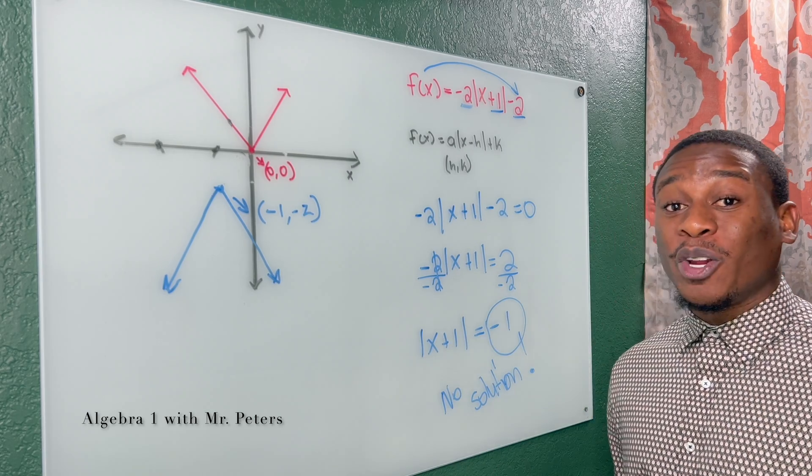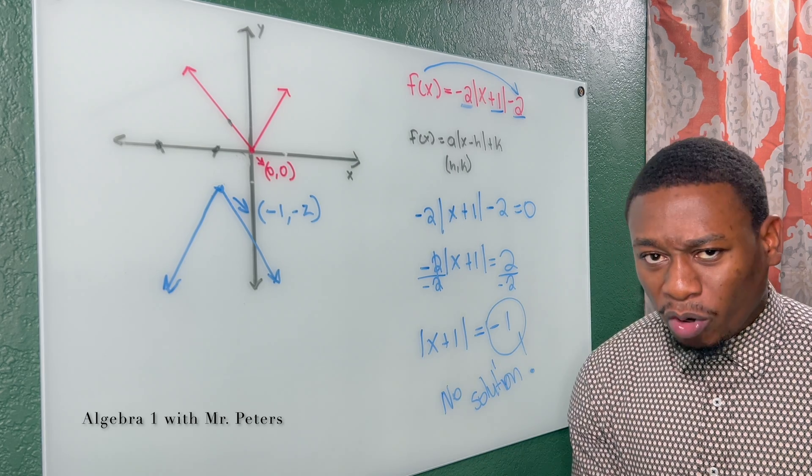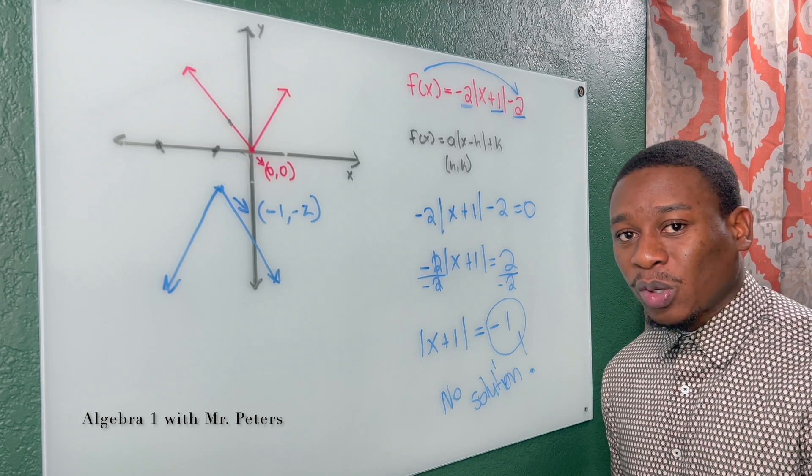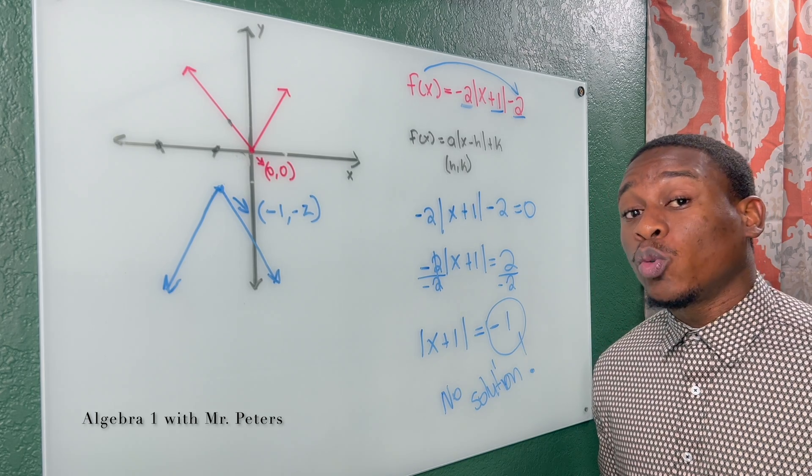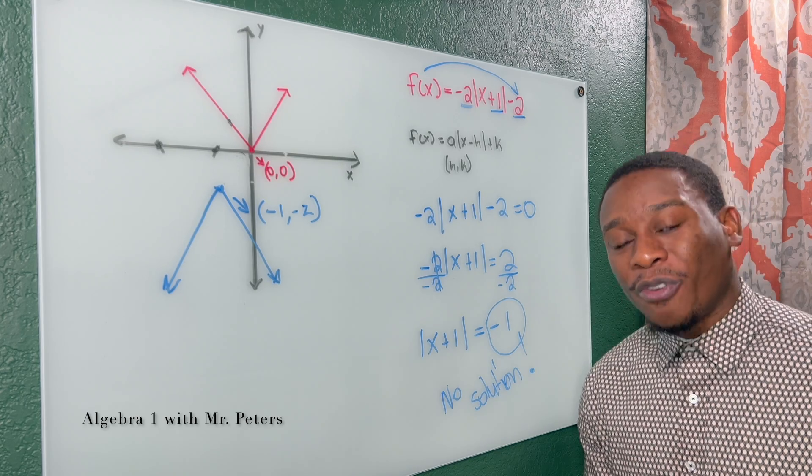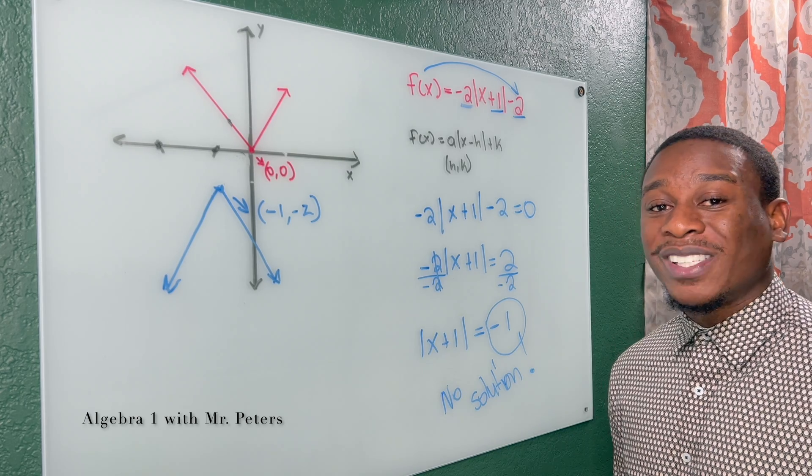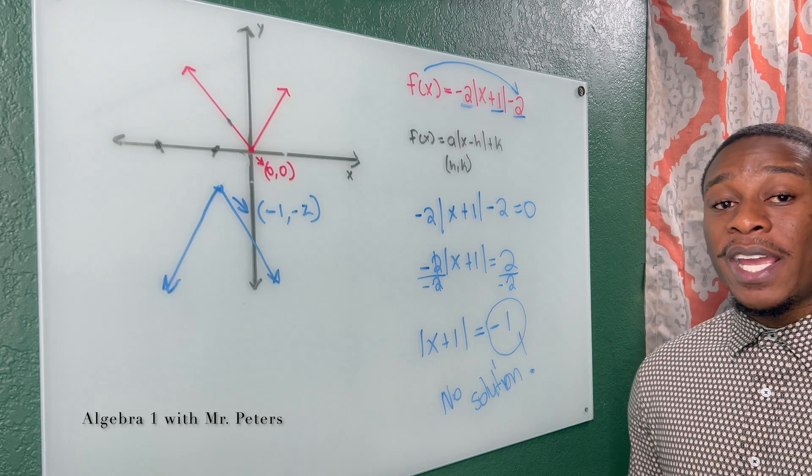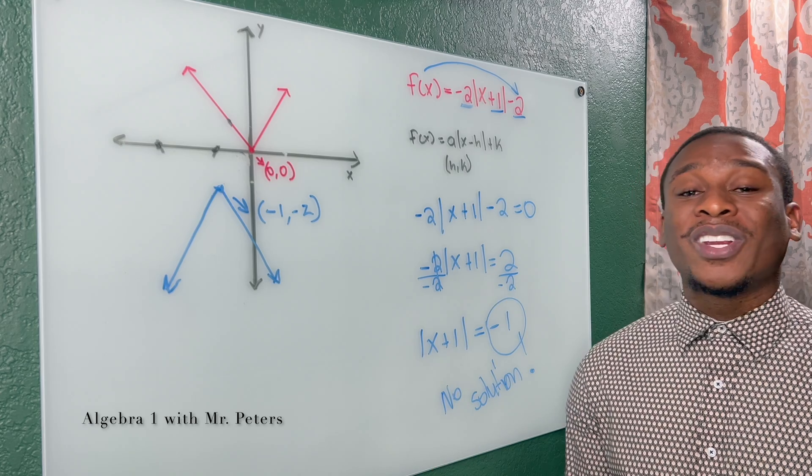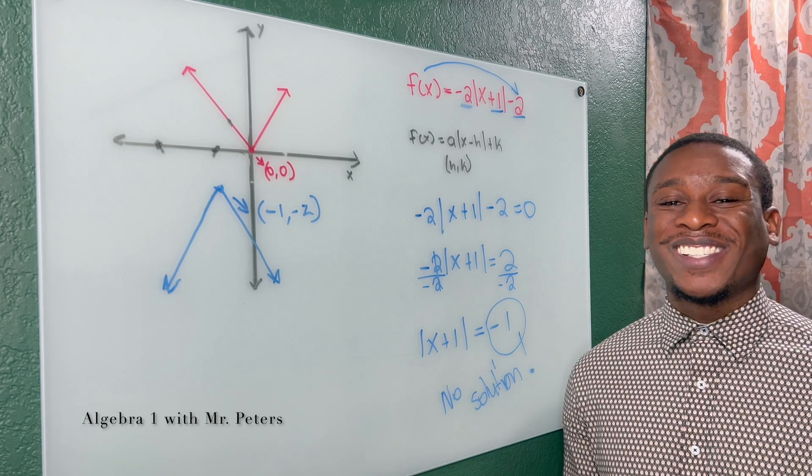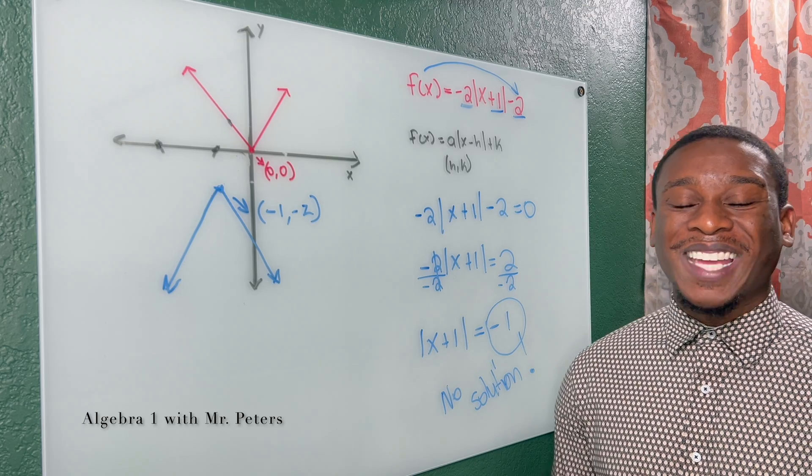Really hope this video was helpful for you guys, clearing up how to graph absolute values by transformations, how to find the zeros, and how to determine if there are actual solutions after graphing the absolute value function. Thank you guys so much for joining us today on Algebra 1 with Mr. Peters. Smash the like button, subscribe to the channel, and leave comments for future videos you guys would like to see on our channel or if you guys had questions on today's video.